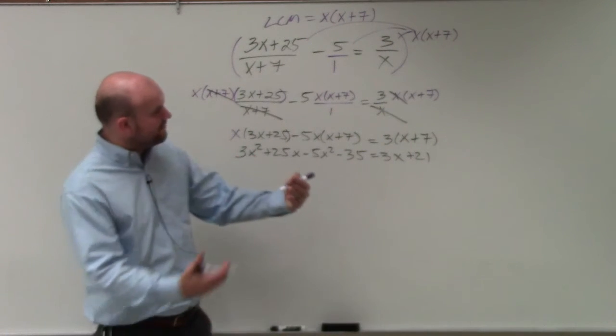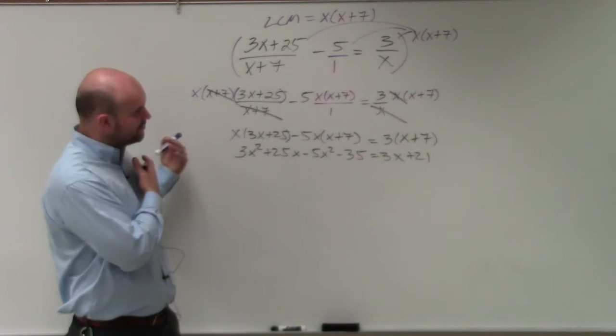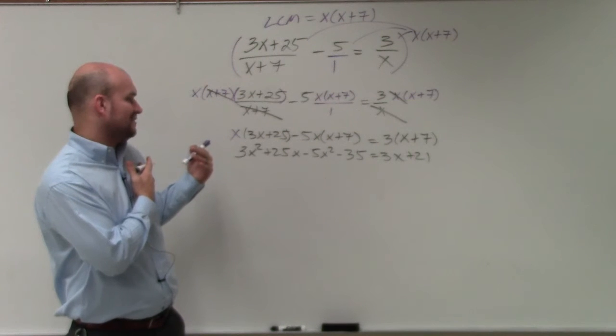So I get 3x squared plus 25x minus 5x squared minus 35x equals 3x plus 21. We notice that it's a quadratic, so therefore I'm going to want to get all the terms to one side and set it equal to 0, so I can factor to solve.